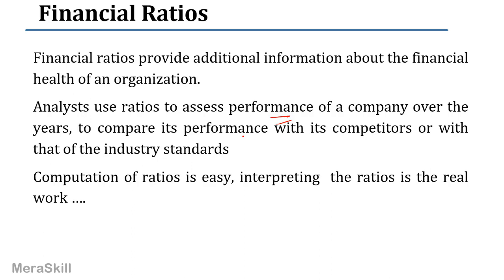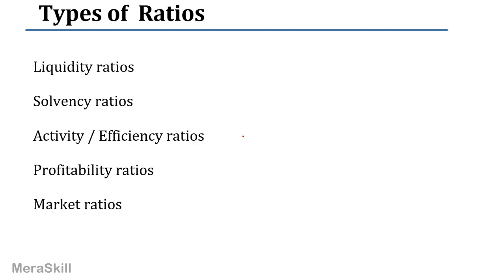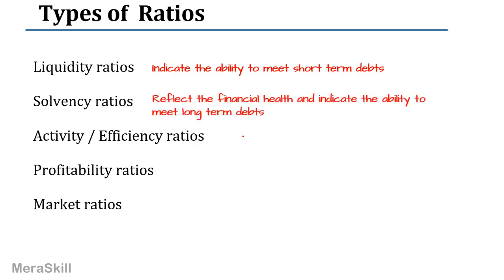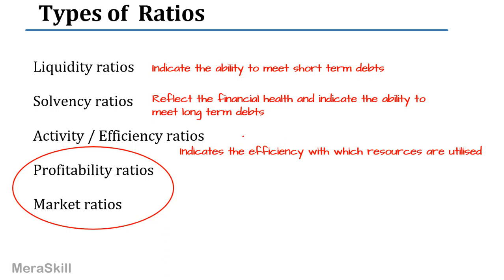There are certain formulas and we can learn the formula and compute the ratios. But interpreting the ratios and understanding them in the entire picture — that is what is really important, that is what is crucial. The types of ratios are liquidity ratios, solvency ratios, and activity or efficiency ratios. You also have profitability ratios and market ratios, which we will not discuss in this module — we will discuss them in the next module. We are going to do liquidity, solvency, and activity ratios.